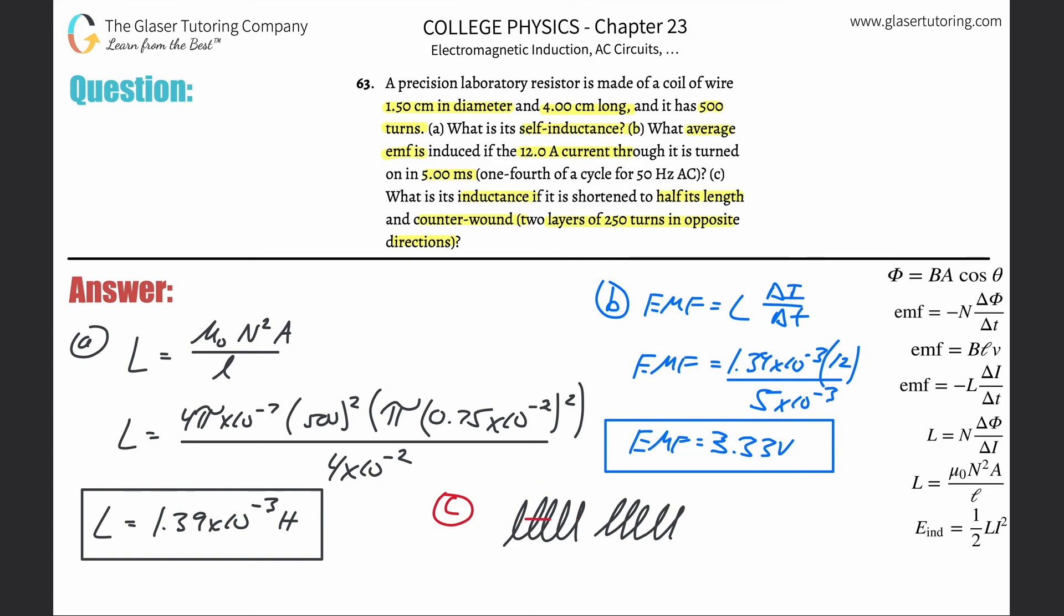will be opposite to the magnetic field traveling through the other part of the solenoid because they are counter-wound. Since they're equal with 250 turns each, the magnetic field is zero—they cancel. If there's no magnetic field, there's no inductance.